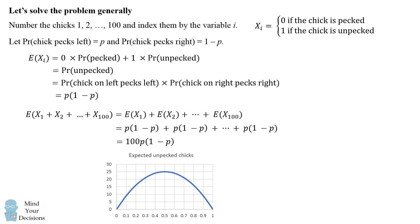Now this will actually depend on the variable p. When you have lower values of p and higher values of p, it will deviate from the maximum value of 25. When p is equal to 50% or 0.5, the answer is 25 unpecked chicks.